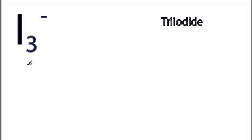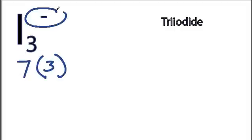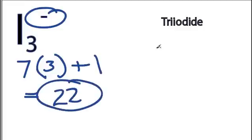On the periodic table, iodine is in group 7, or 17. It has 7 valence electrons, but we have 3 of them. And then we have this negative up here, so we're going to add another electron to that. So 21 plus 1, 22 total valence electrons.